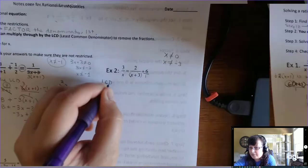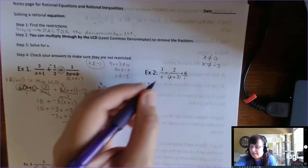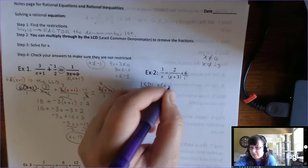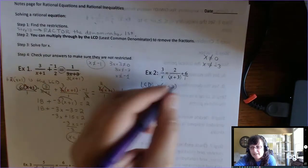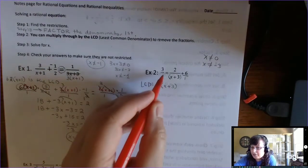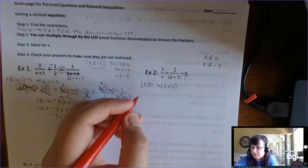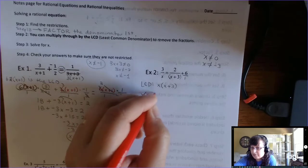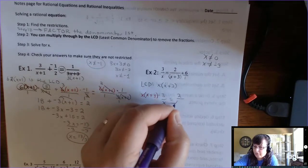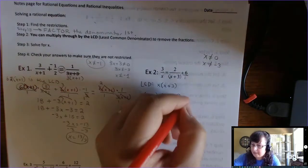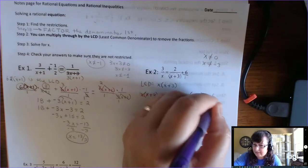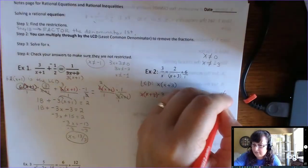Okay, so what is the LCD? Remember with variables, we just pick up everything that we need. So this has an x in its denominator. So that's part of the LCD. This is completely different. That's an x plus 3. So that's part of the LCD. And then 1 is already there. So that's your LCD. So what you're going to do is you're going to multiply every one of these terms, 1, 2, 3 terms, by x times x plus 3. So x times x plus 3 times 3 over x equals 2 over x plus 3 times x times x plus 3 plus 6 over 1 times x times x plus 3.